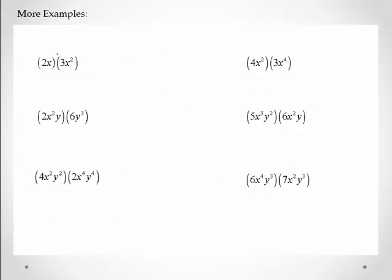Here are some more examples. I have 2 times 3, that's 6, and x times x squared, that's 1 plus 2, so that's 3. 2 times 6 is 12. x squared—there's no other x portion that I'm multiplying by, so I just carry that over. And then y times y to the 3rd, that's 1 plus 3, so that gives me 4. Now 4 times 2 is 8. x squared times x to the 4th, so 2 plus 4 is 6. And then y squared times y to the 4th, 2 plus 4 is 6.